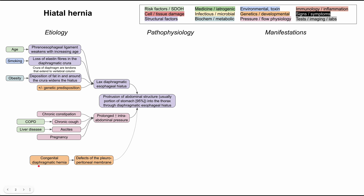There are also congenital diaphragmatic hernias, which can cause defects in the pleuroperitoneal membrane and predispose you to hiatal hernias, but these are rather rare causes. Usually hiatal hernias are acquired, whereas congenital diaphragmatic hernias cause problems in infancy requiring repair much earlier in life as a pediatric patient. We're largely focusing on the adult population for hiatal hernias.